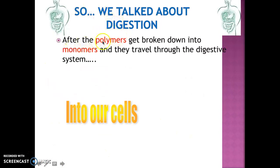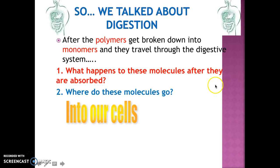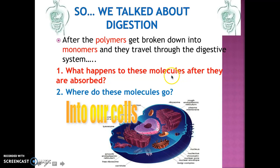We have talked about digestion. After the polymers get broken down into monomers, they travel through the digestive system. So what happens to these molecules after they are absorbed? Where do these molecules go? These are questions that we are going to try to answer.